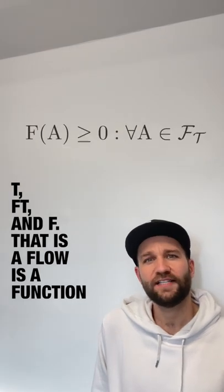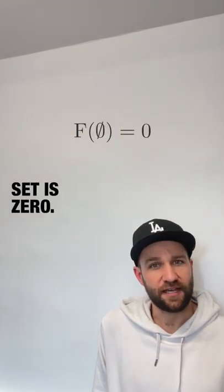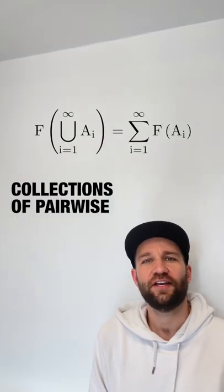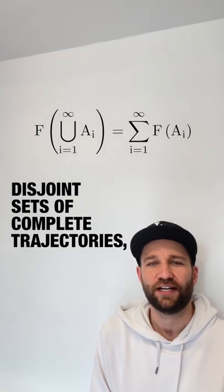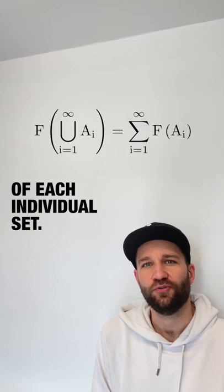That is, a flow is a function from a set of complete trajectories to the non-negative real numbers, such that the flow of the empty set is zero. And for all countable collections of pairwise disjoint sets of complete trajectories, the flow of the union of those sets is equal to the sum of the flows of each individual set.